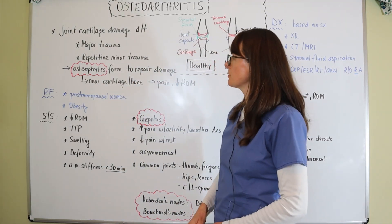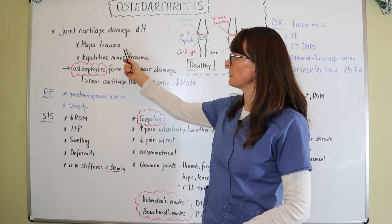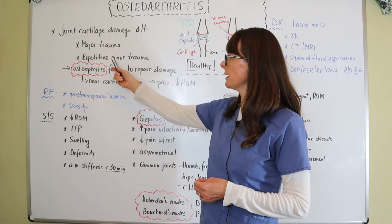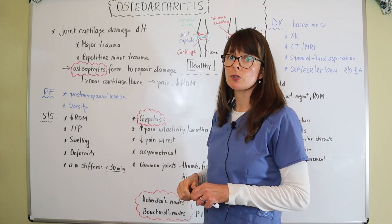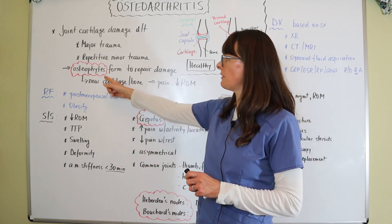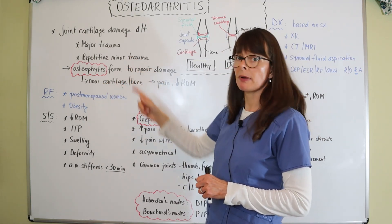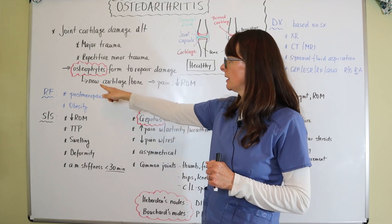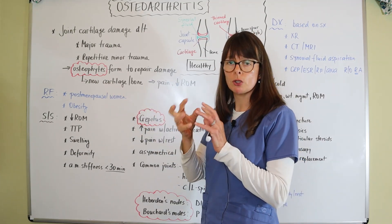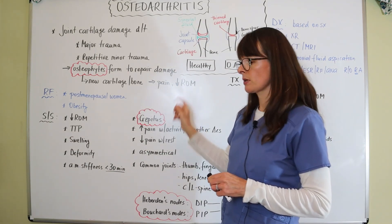In terms of pathophysiology for osteoarthritis, there is damage to the joint cartilage because of either major traumas or a serious injury to that joint, or some repetitive minor trauma — microtrauma — that persists over time. What happens is osteophytes form, also called bone spurs, and they try to repair the damage caused by that trauma to the joint capsule and joint cartilage. These osteophytes are basically new cartilage and bone that try to repair the damage, and that then causes pain and decreased range of motion.